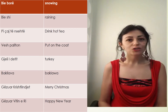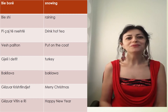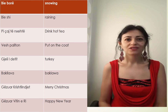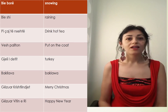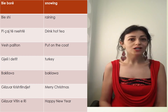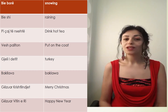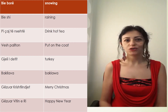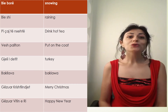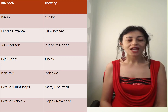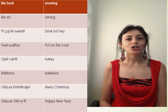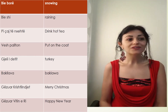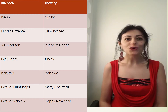Another thing that we eat a lot for Christmas and New Year is turkey. In Albanian it is gjeli i detit. We also have a wonderful dessert which is baklava, used only for this period of the year. How do we say Merry Christmas? Gëzuar krishlindjet. And Happy New Year? Gëzuar vitin e ri.